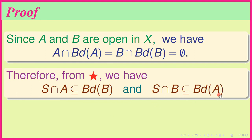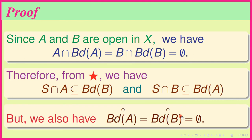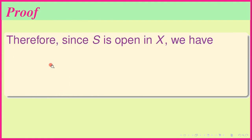We also have that the interior of Bd(A) and the interior of Bd(B) are both empty sets, since A and B are open. This means Bd(A) and Bd(B) cannot contain any non-trivial open set. Since S is open and S ∩ A ⊆ Bd(B) while S ∩ B ⊆ Bd(A), and these boundaries have empty interior, we conclude that S ∩ A and S ∩ B are both empty sets.